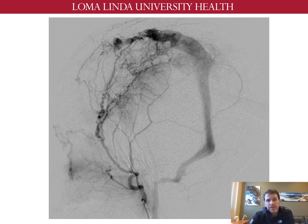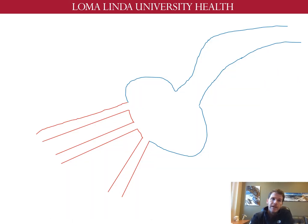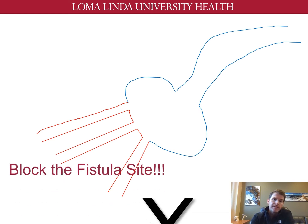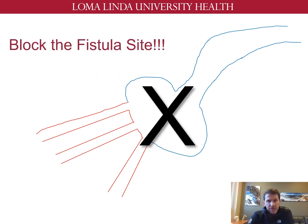Cranial dural AV fistulas are some of the most complex lesions we treat. However, the goal of treatment is simple — to block the fistula site. There can be multiple arteries connecting to one fistula sac with a large draining vein, which many times is a venous sinus. Unlike in an AV malformation, where each abnormal arteriovenous connection must be carefully closed and divided and the nidus completely removed, in an AV fistula, blocking the fistula site is enough to stop the pathologic process.